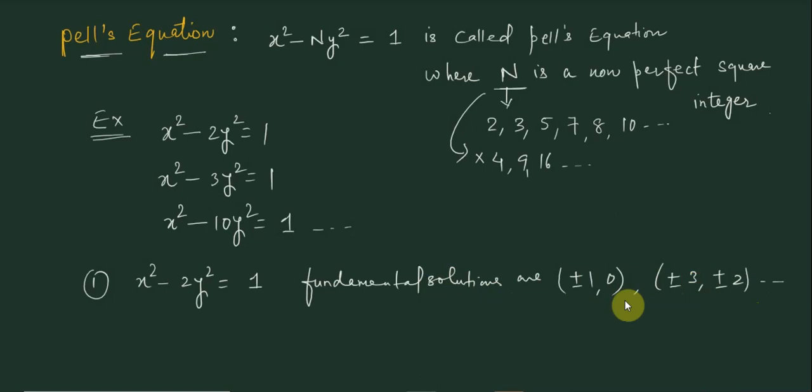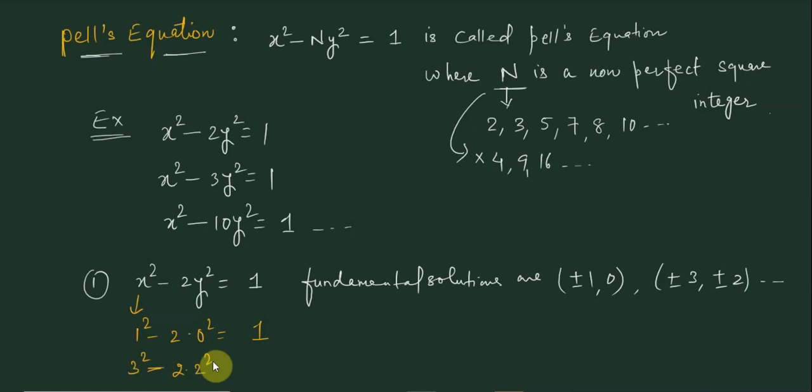We can verify: putting x = 1 and y = 0 gives 1² - 2·0² = 1, which satisfies the equation. Also, putting x = 3 gives 3² - 2·2² = 9 - 8 = 1, so it satisfies the equation too, whether taking plus or minus.